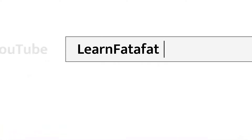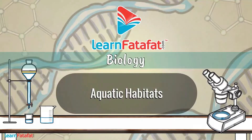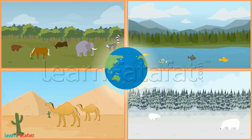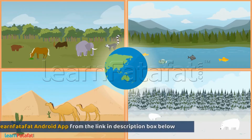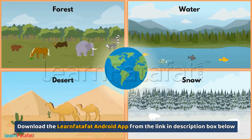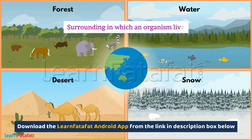Aquatic Habitats. Earth is a home for all living organisms. Different organisms live in different surroundings. The surrounding in which an organism lives is called its habitat.